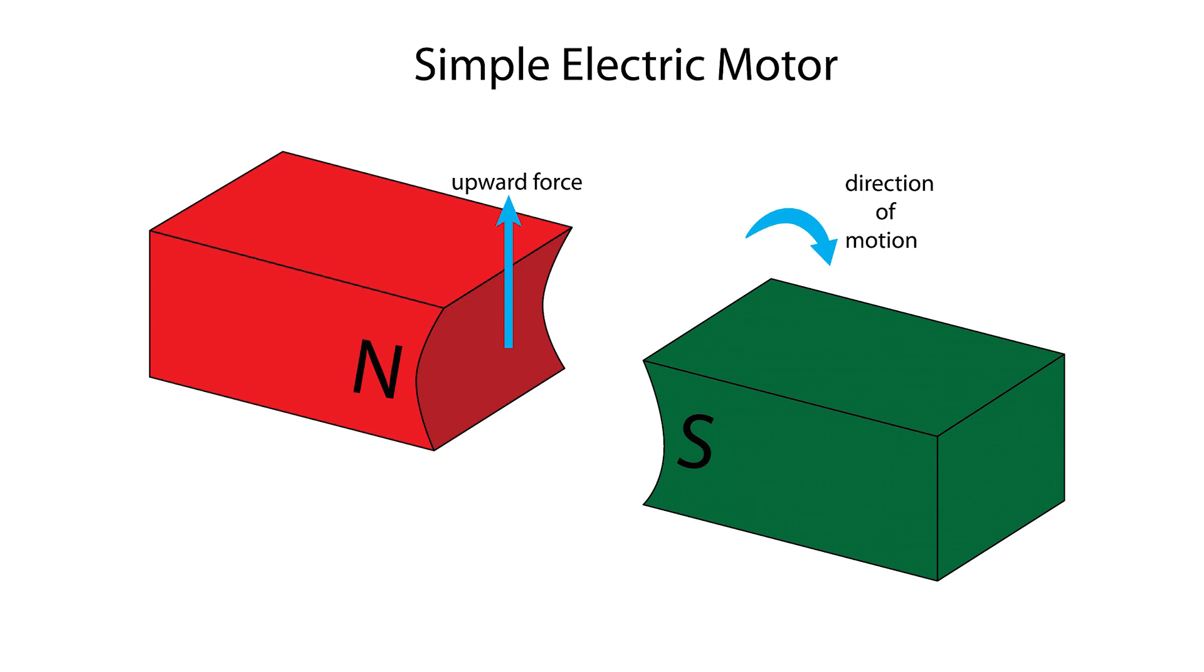An electromagnet is created inside the motor by winding wire around a piece of metal. A commutator will then reverse the electric current in the coil each time the coil rotates through a half a turn.